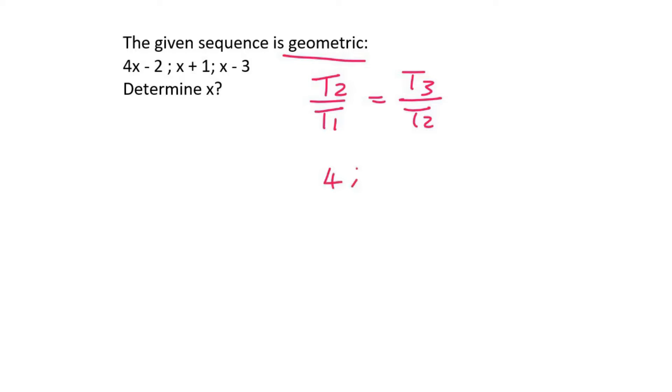Want some proof? Well, imagine we had a sequence that goes 4, 8, and 16. That's a geometric sequence. If I take term 2 divided by term 1, that gives me 8 over 4, which is 2.